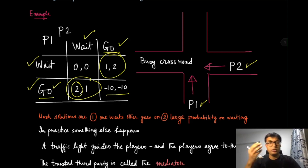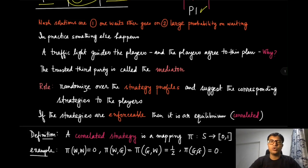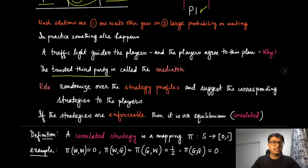We cannot explain this kind of situation using mixed strategy Nash equilibrium. Rather, what we see in practice is a device — a traffic light or traffic police — that guides the players, and players essentially agree to this plan. The police or traffic light might ask one car to go and the crossroad car to wait, and then in the next round allow the crossroad cars to move. This trusted third party is called a mediator.